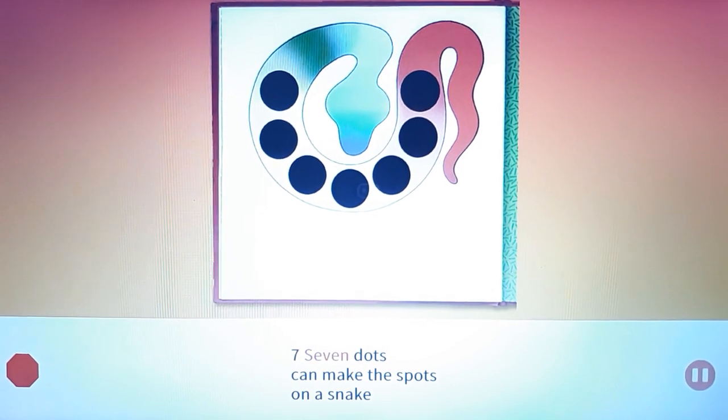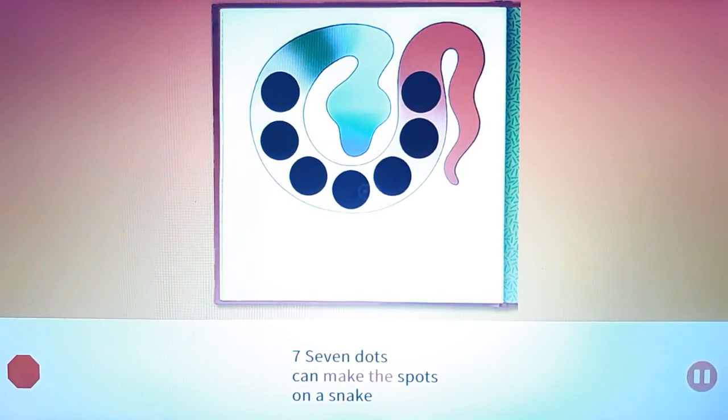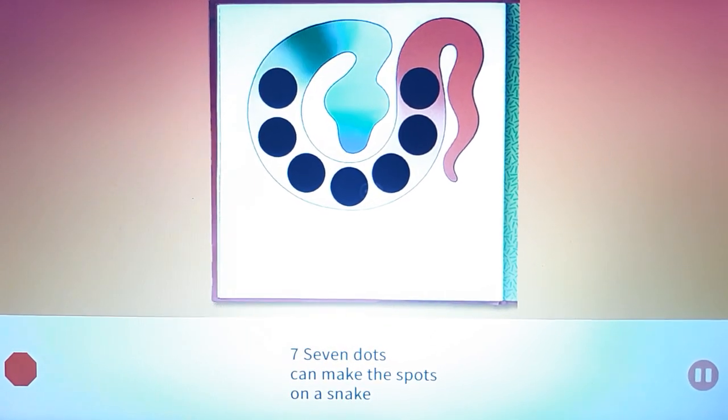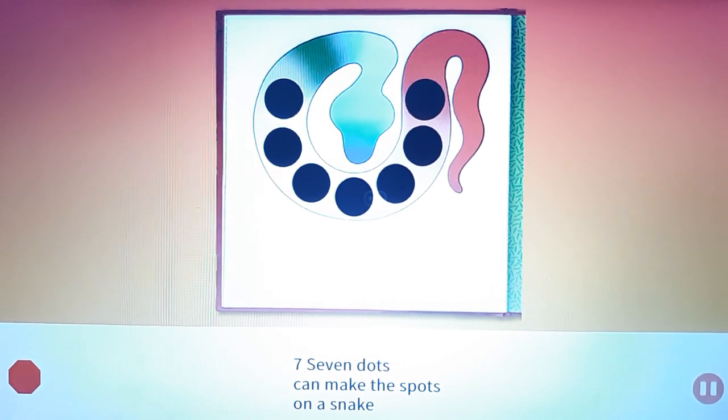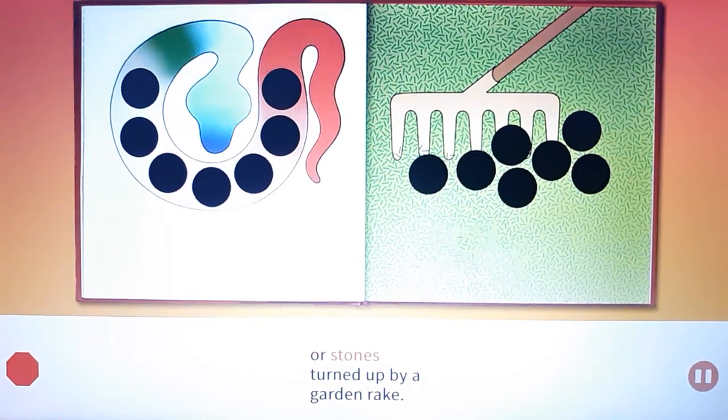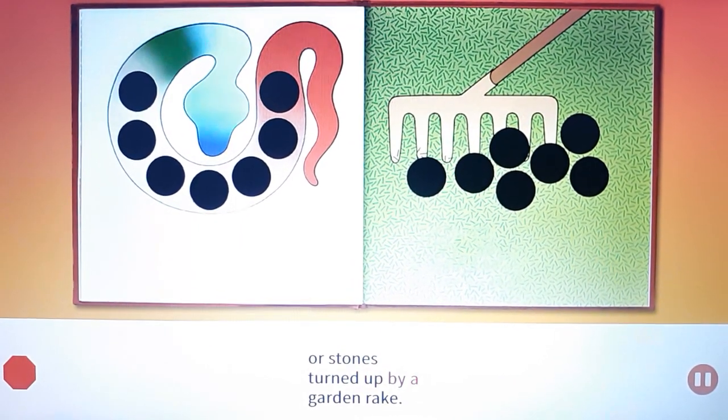Seven. Seven dots can make the spots on a snake, a lake, or stones turned up by a garden rake.